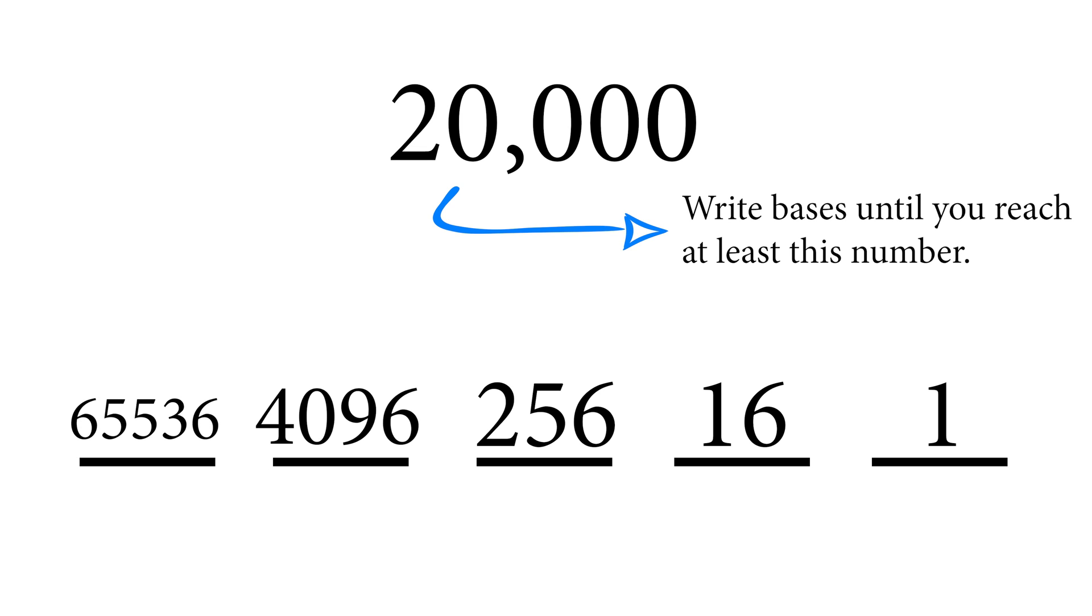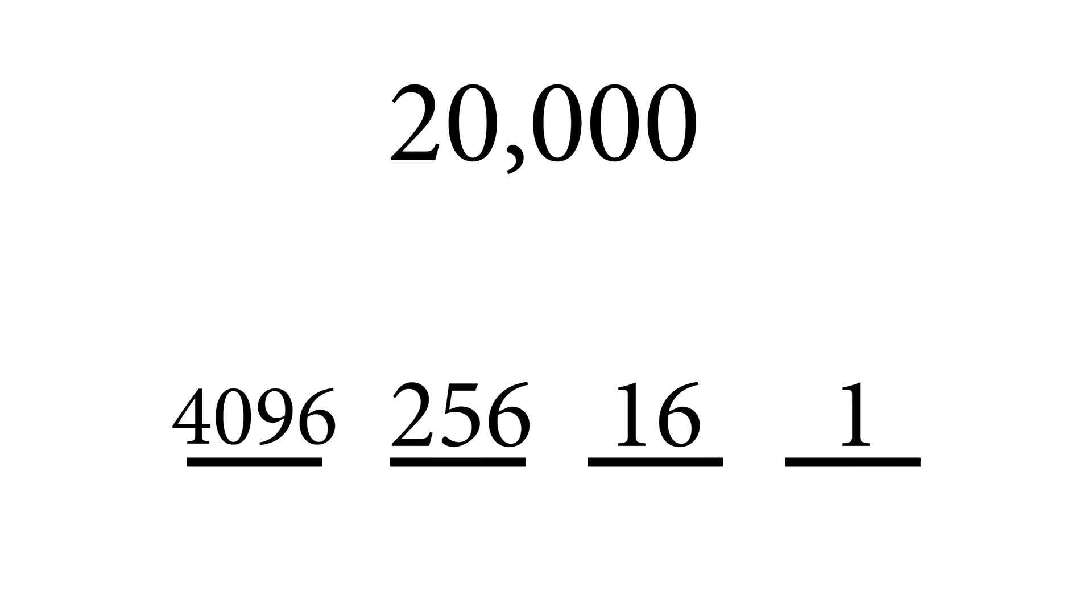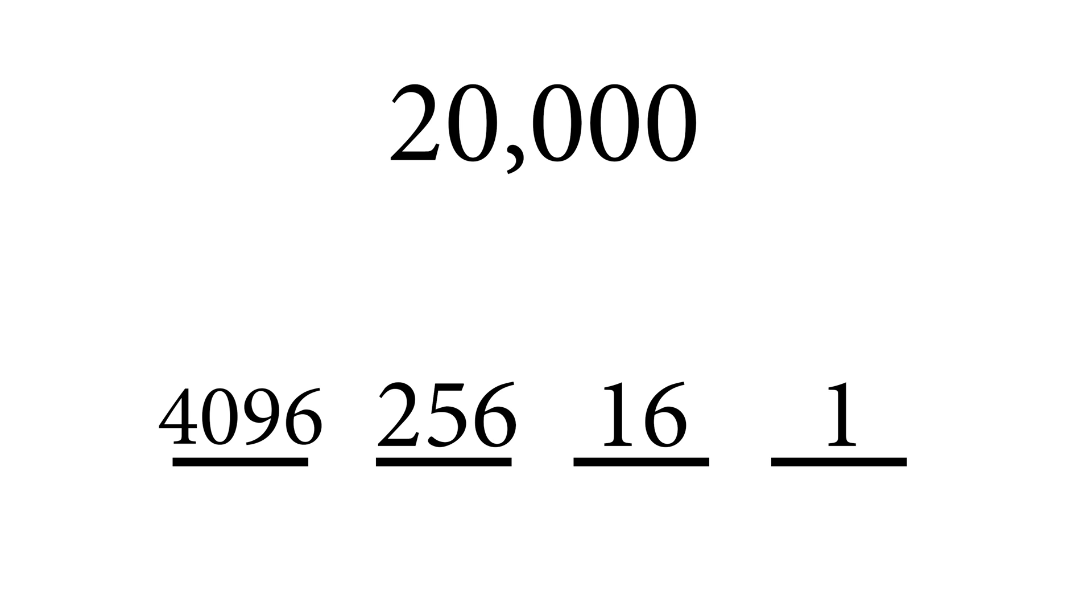Again that last one's usually not needed, that's for bigger numbers, but again you pick the largest number here that can fit inside 20,000. So immediately we know that the 65,000 number we can't even use because even if you had a 1 there you're already at 65,000. So that one can be completely ignored. This is going to be a four digit number we can already tell.